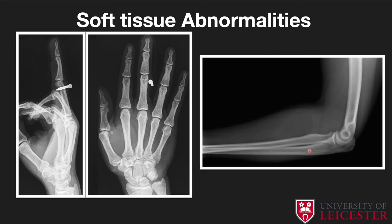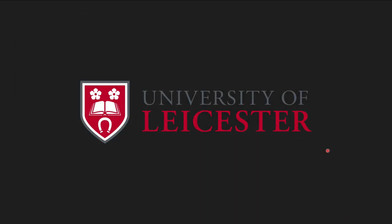Here on a lateral elbow radiograph with no fracture demonstrated, there is a subtle rounded well-defined lucency in the soft tissues of the forearm with associated soft tissue swelling, no anterior humeral line fat pad sign. This soft tissue lucency is in keeping with a lipoma. If there is trauma, think of collections and hematomas. Further imaging may be needed if there's no underlying fracture identified.